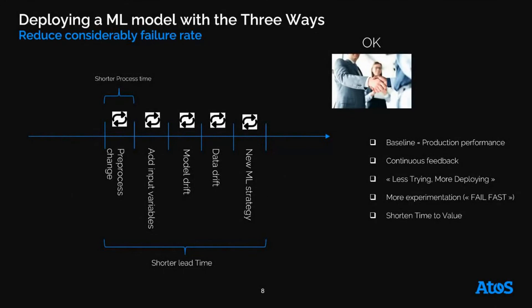Now let's start from scratch with the same team, but this time using the Three Ways. Everything we do is based on production performance — what the user is going to get on screen. It doesn't matter if a data scientist had 95% accuracy in testing, if the end user only gets 70%. We are cycling fast, there is continuous feedback, and this is what DevOps calls 'less trying, more deploying.' By doing so, we shorten the time to value.